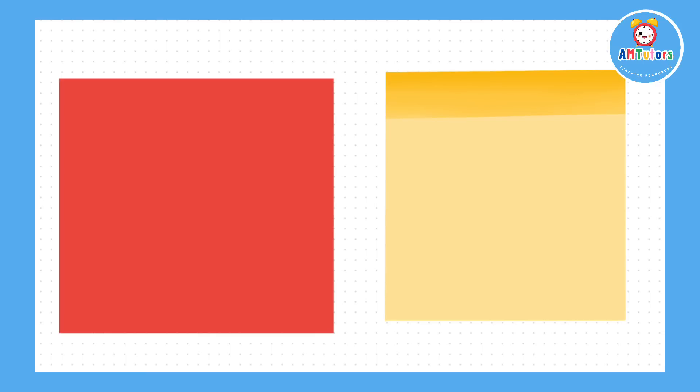Here is a picture of a sticky note. What shape do you think this is and how many edges does it have? The sticky note is a square shape and it has four edges.